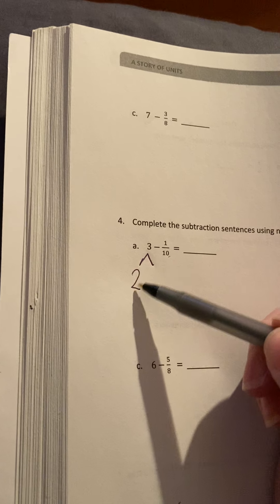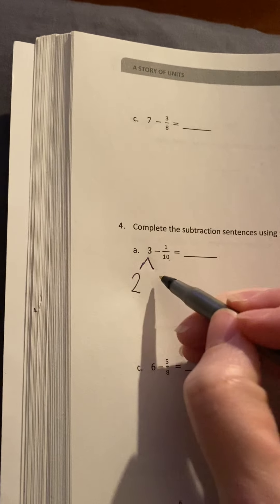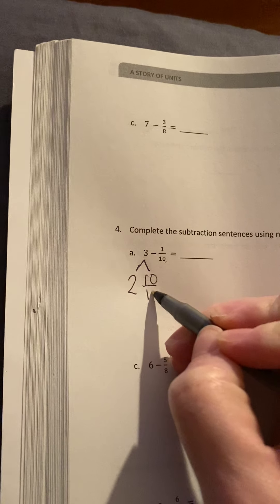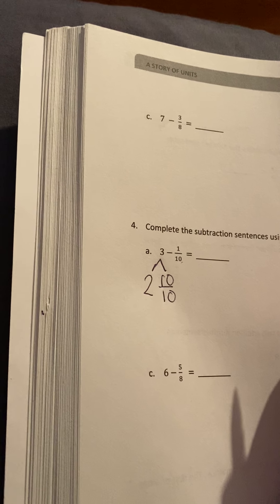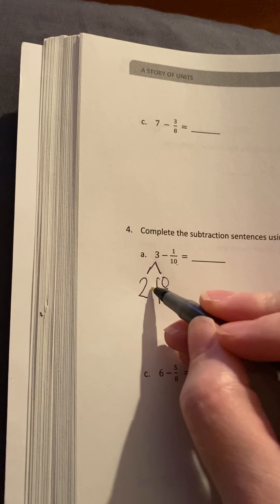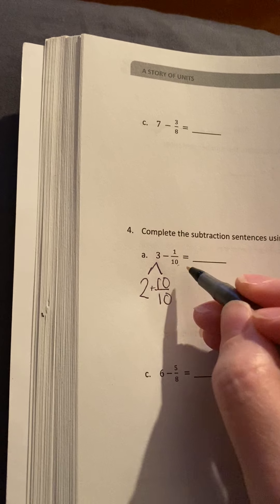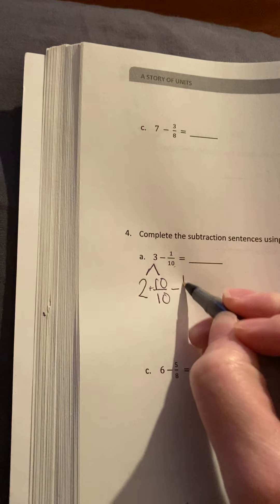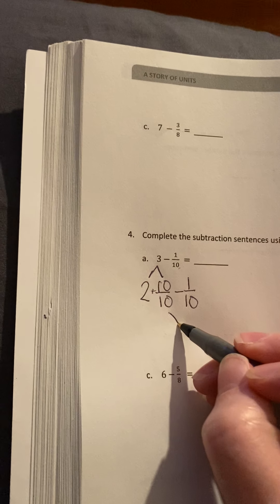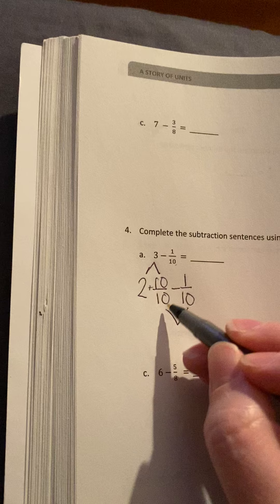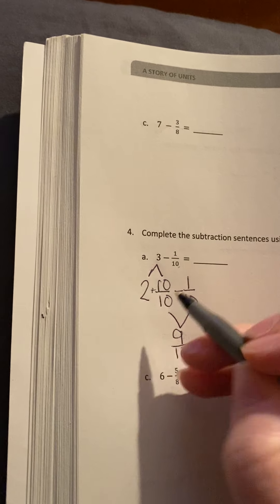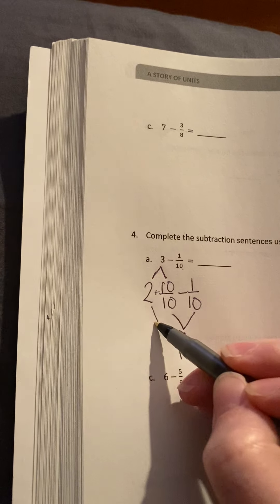So I did 3 minus 1 is 2 and that 1, I want to make it a fraction. Well, 1 whole as a fraction, keeping the same denominator, would be 10 over 10. So I have 2 wholes and 10 tenths and I'm going to subtract 1 tenth. So I'm going to subtract my fractions first. So I have 10 tenths minus 1 tenth. That's going to give me 9 tenths.